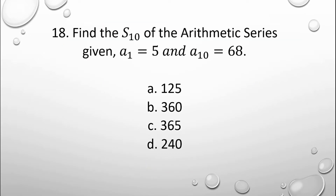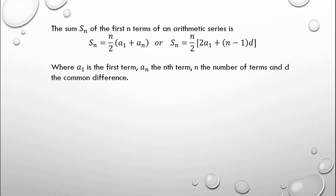Next: find the sum of the first 10 terms of the arithmetic series, given a sub 1 is equal to 5 and a sub 10 is equal to 68. The choices are: a) 125; b) 360; c) 365; d) 240. The sum of the first n terms of an arithmetic series is S sub n equals n over 2 times a sub 1 plus a sub n, or S sub n equals n over 2 times 2a sub 1 plus n minus 1 times d.